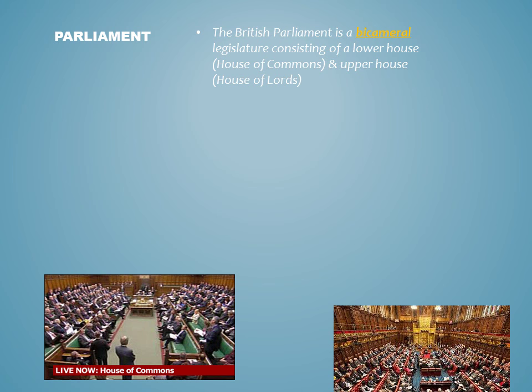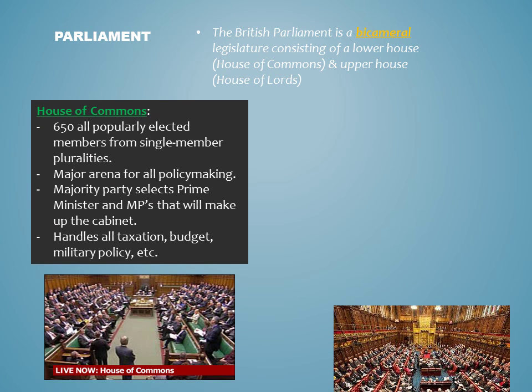Just like the United States Congress, the British Parliament is considered a bicameral legislature because it has two chambers: a lower house, the House of Commons, and an upper house, known as the House of Lords. By far, the more integral policymaking component is that of the House of Commons, which consists of 650 popularly elected members from single-member pluralities. The House of Commons is the major arena for all policymaking and debate, as it selects the head of government, the Prime Minister, from within its majority party, and the cabinet — all elected MPs as well.